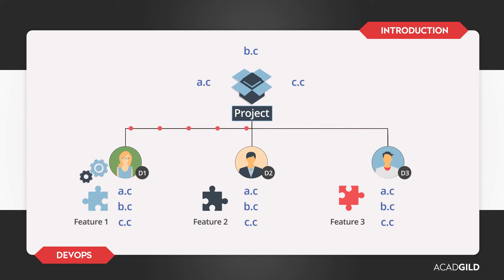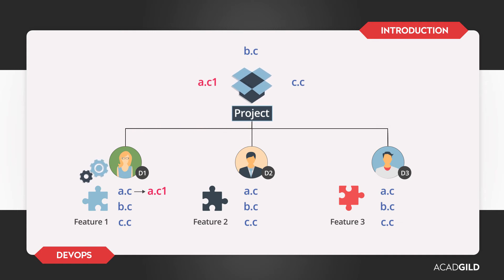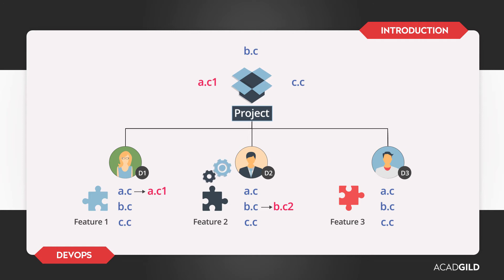Developer 1 starts working on the AC file. He has made some changes and saved the file as AC1, and uploads it to the network location such that Developer 2 and Developer 3 can see the changes and build their changes on top of that file. In the network location, the AC file becomes AC1. Developer 2 is working on the BC and CC files, made some changes, and named them BC2 and CC2, and uploads his files to the network location.